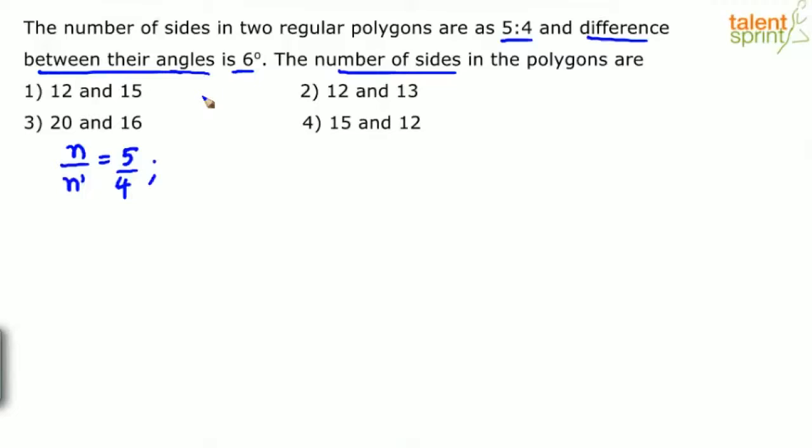The difference between their interior angles is 6 degrees. The interior angle formula is (2n-4)×90/n. When you simplify, 2×90 is 180 degrees minus 360/n. So the interior angle equals 180° - 360°/n.